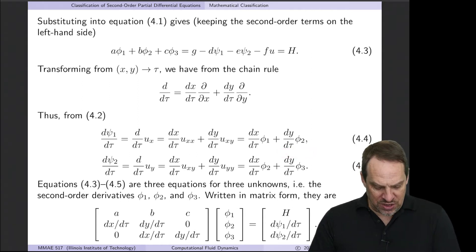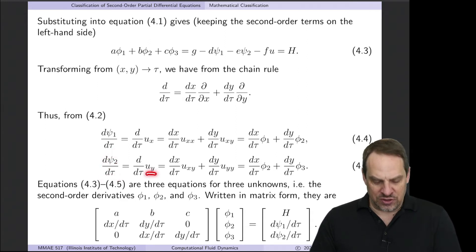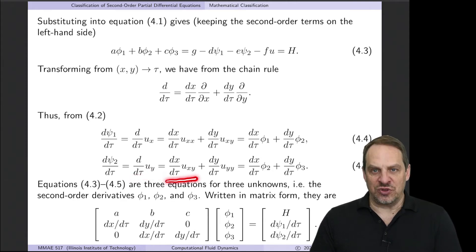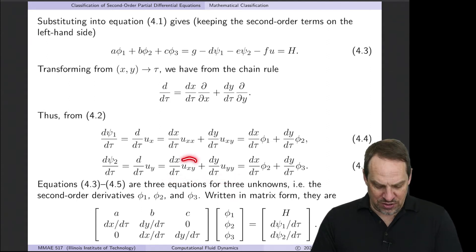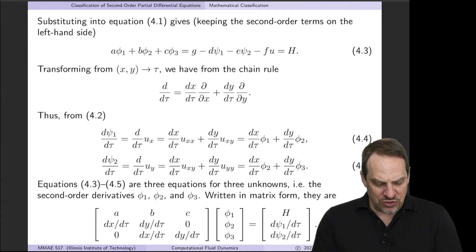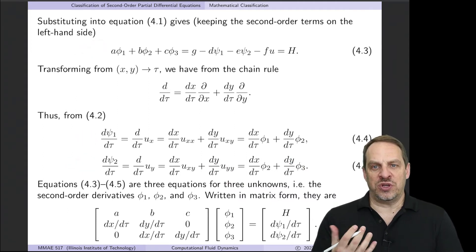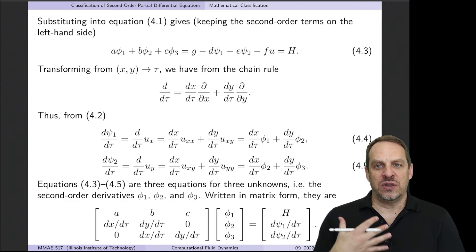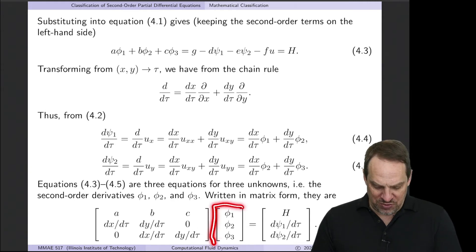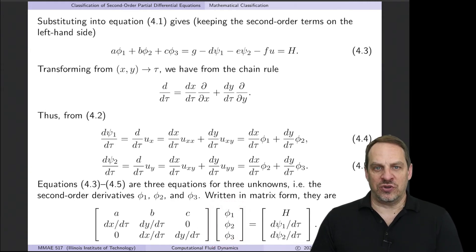Now let's do the same thing — d/dτ but of psi2. Psi2 is ∂u/∂y, so we have d/dτ of uy = dx/dτ · uxy + dy/dτ · uyy. Since uxy is phi2 and uyy is phi3, we have dpsi2/dτ = dx/dτ · phi2 + dy/dτ · phi3. So looking at these three equations, we have three equations for our three unknowns — phi1, phi2, and phi3 — which are the second derivatives uxx, uxy, and uyy. Those will be my solution vector.